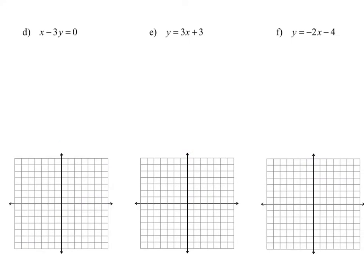For these examples, we're going to graph the linear equation by graphing the intercepts, just like we did in the previous examples. But this time I'm going to use a cover-up method, meaning you cover up the intercepts. For example, if we want to find the x-intercept, that happens when y is equal to 0. So if we were to cover up the y-term, the resulting equation is x equals 0, and so that gives us the point (0, 0).